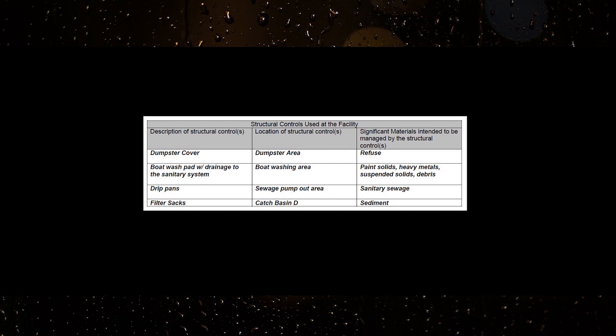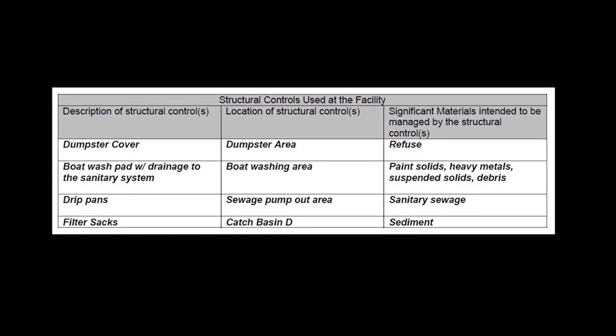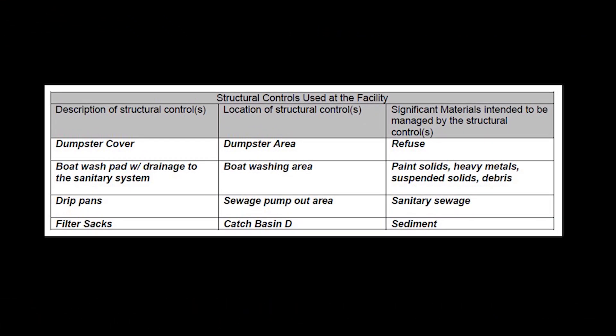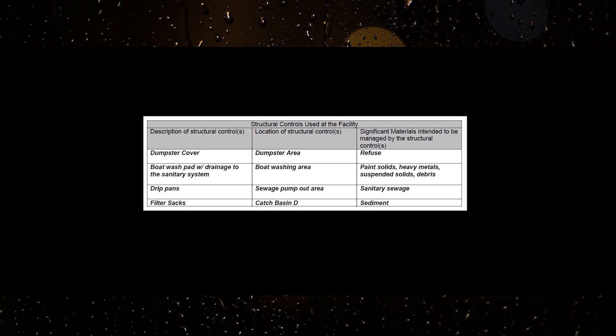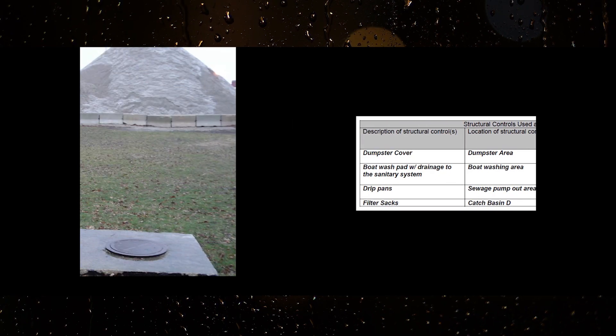The stormwater pollution prevention plan needs to provide a description of the location, function, design criteria, and if necessary, the installation and construction schedule of the structural controls that will be implemented on-site.